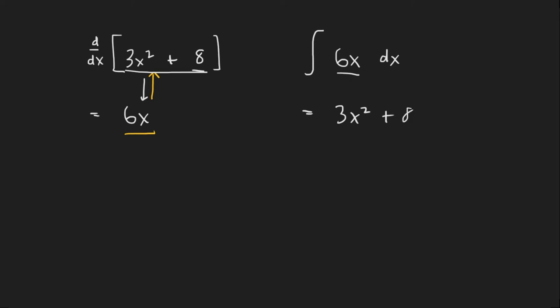What we're missing here is that once we took the derivative of 3x squared plus some constant. So this 8 could have been any number. It could have been 1, 2, 3, up to a thousand. It could have been any constant and the derivative would have still been 0.